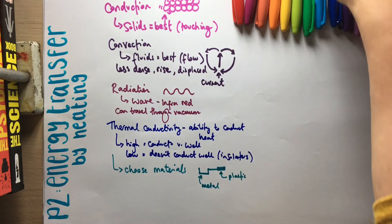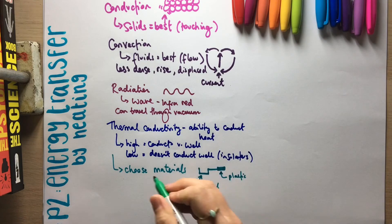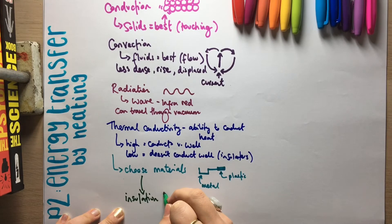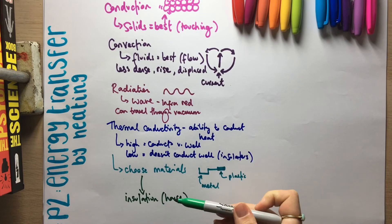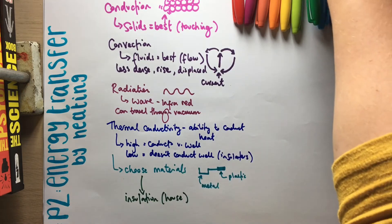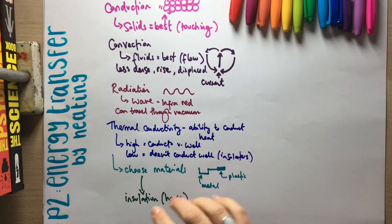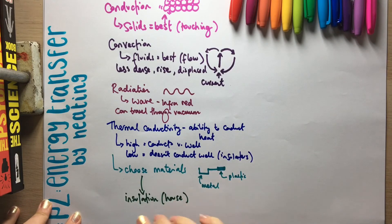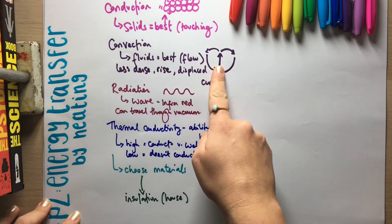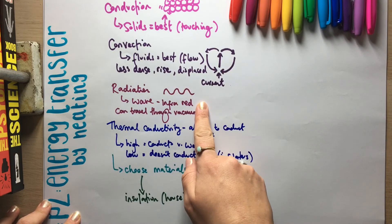Also, you sometimes do get asked questions about choosing a material in the context of insulation in terms of a house. So they could ask you about how houses are insulated. And so it's all about reducing heat loss. So you're thinking about how are you going to reduce conduction? How would you reduce convection? How would you reduce radiation?